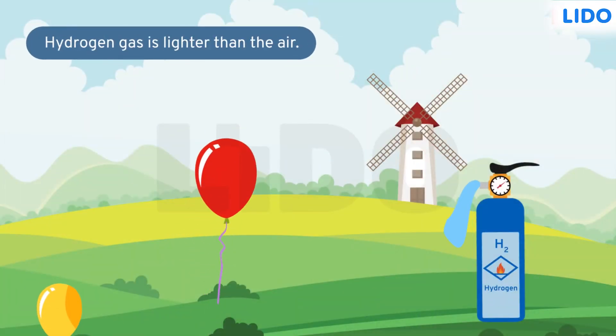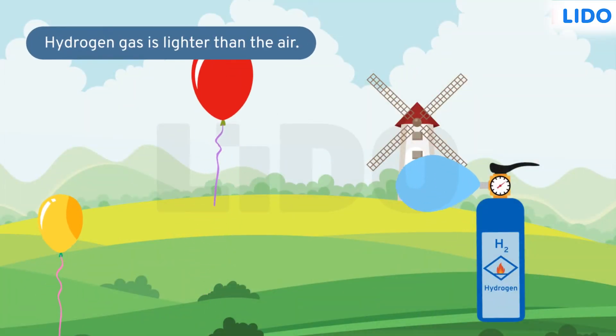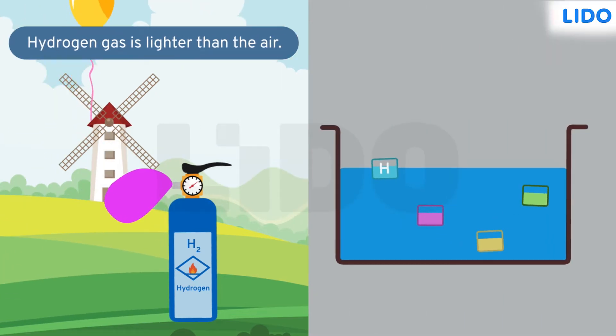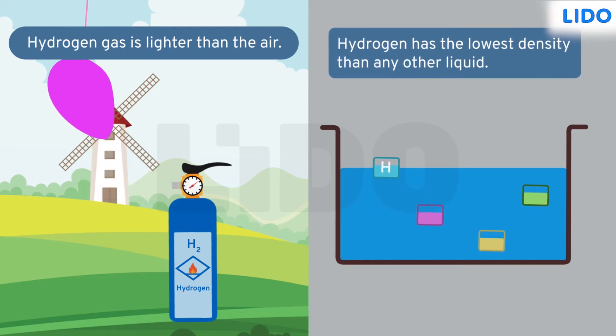Hydrogen gas is 14 times lighter than the air. Not only in the gaseous state, but in a liquid state also, hydrogen has the lowest density as compared to any other liquid.